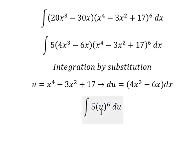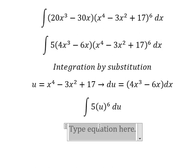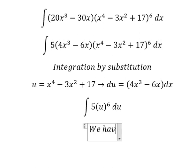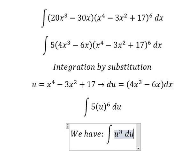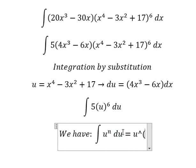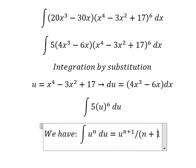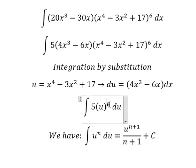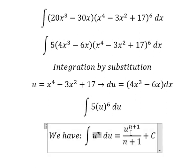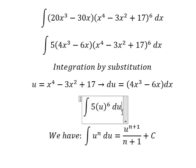Now we apply the integration formula. We have u to the power of 6, so 6 plus 1 gives us 7. The result is 5u^7/7 + C.